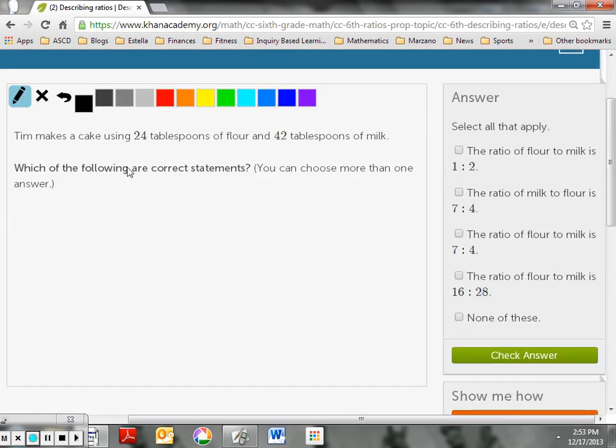It says, Tim makes a cake using 24 tablespoons of flour and 42 tablespoons of milk. Now I see a ratio here. I am comparing flour, and again I apologize my pen's been acting up today, flour to milk. So there's my ratio. Now we could also do flour to milk like this. Now I see he has 24 tablespoons of flour for 42 tablespoons of milk. And again, I'll label flour over milk.